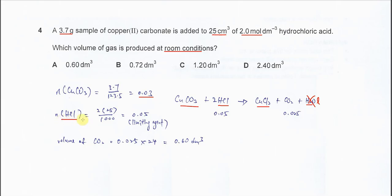So, the mol of HCl, just use MV over 1000, so you get 0.05. Even though the mol of HCl calculated is more than the copper carbonate, from this equation, we know that one mol of copper carbonate is going to react with two mols of HCl.